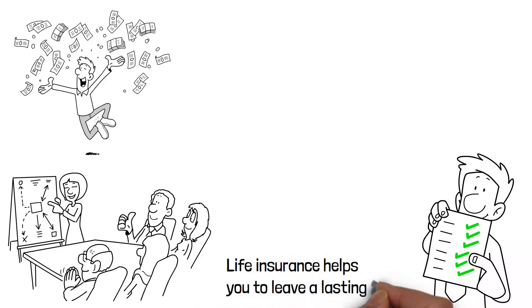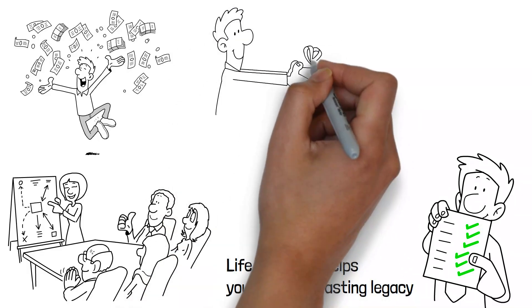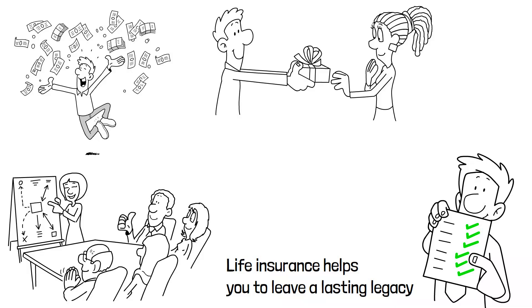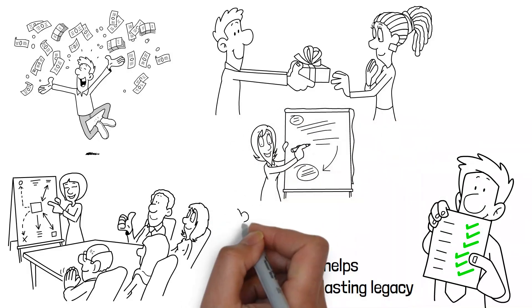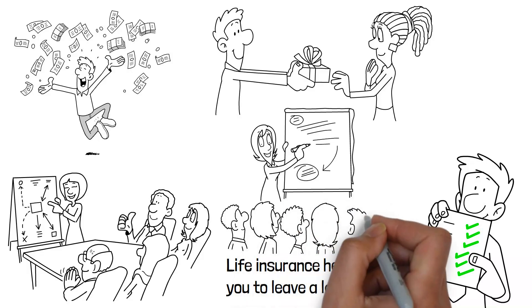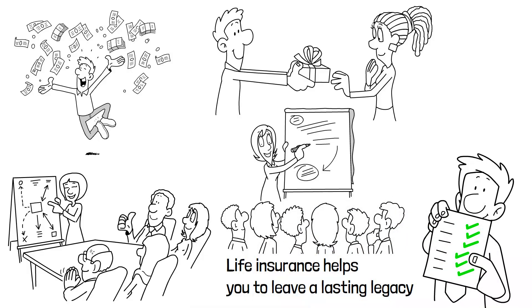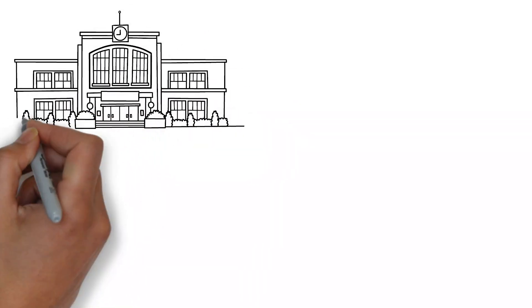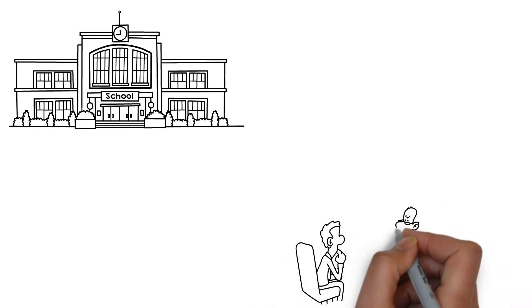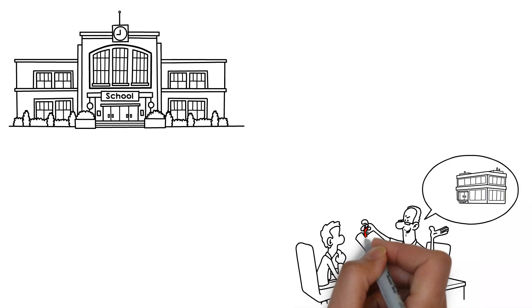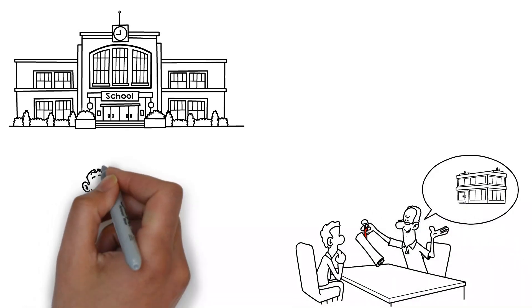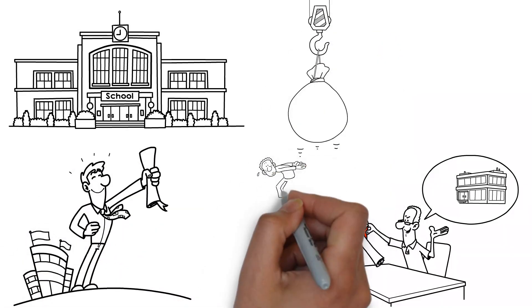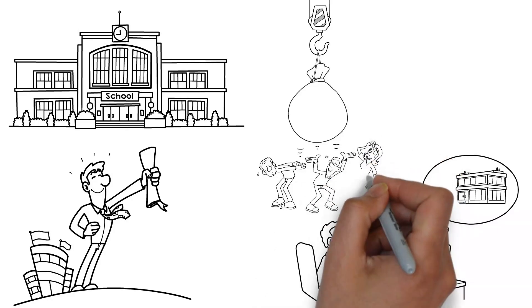Life insurance helps you leave a lasting legacy. You may direct a percentage of the death benefit to charity organizations, leaving a generous legacy that matches your beliefs and interests. This technique helps not just the charity organizations you care about, but it also allows for estate tax deductions. The tax-free death benefit may also be used to support the education of your children or grandkids, guaranteeing that future generations have the financial means to pursue higher education without the burden of student debt.